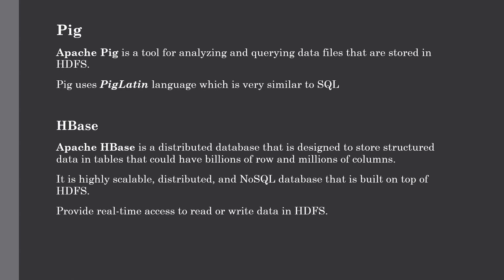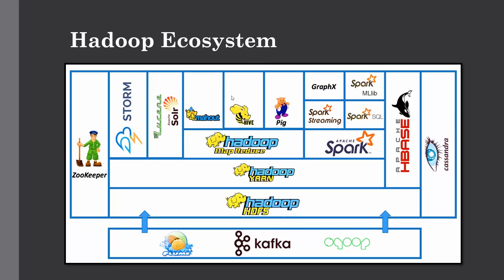Our next component is Apache Pig, which is also similar to Hive and used for analyzing and querying data files stored in HDFS. It has its own language known as Pig Latin, which is very similar to SQL. It loads the data, applies required filters, and dumps the data in the required format. For program execution, it requires a Java runtime environment. Pig also sits on top of MapReduce, which uses YARN as a resource negotiator, and Pig queries are converted into MapReduce functions to transform the data stored in HDFS.